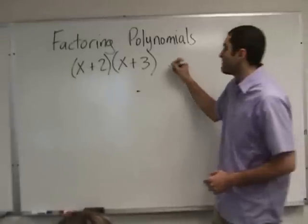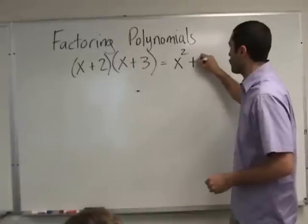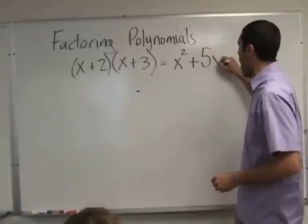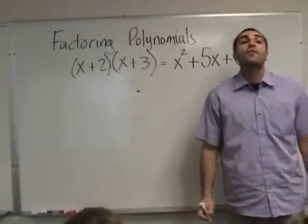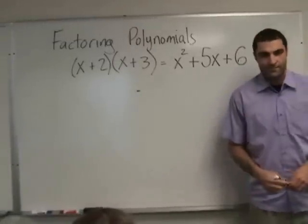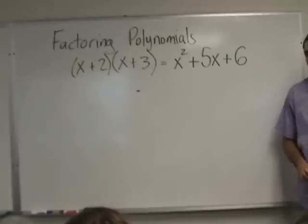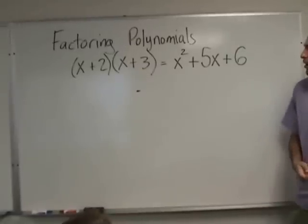Okay, equals x squared, I'll write slowly, plus 5x, plus 6. How'd you get 5x? 3x plus 2x makes 5x. By now, that's where we are. Okay, good.